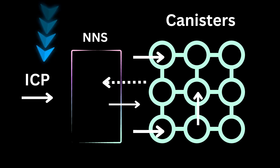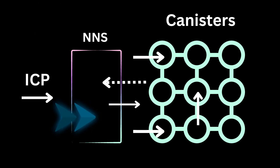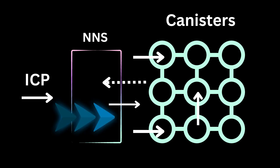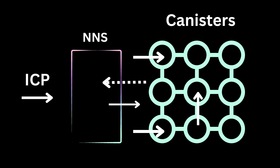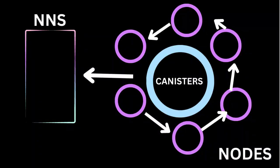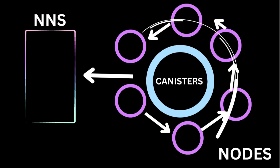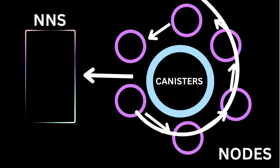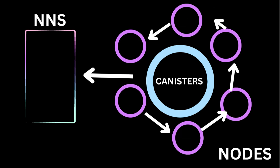The way the blockchain works is: an HTTP request comes in, it goes through the NNS system, which governs the entire canisters and all the information inside them. The NNS sends the information to a canister. Inside the canisters can be pretty much anything — a platform, a development, an NFT — basically anything that comes through the system.